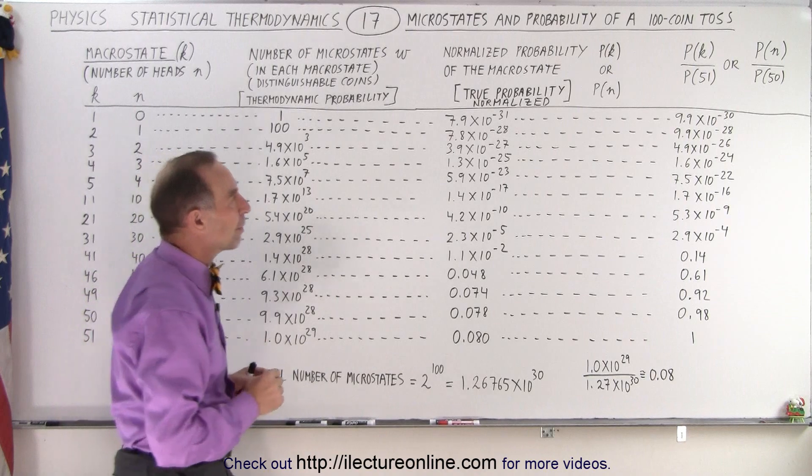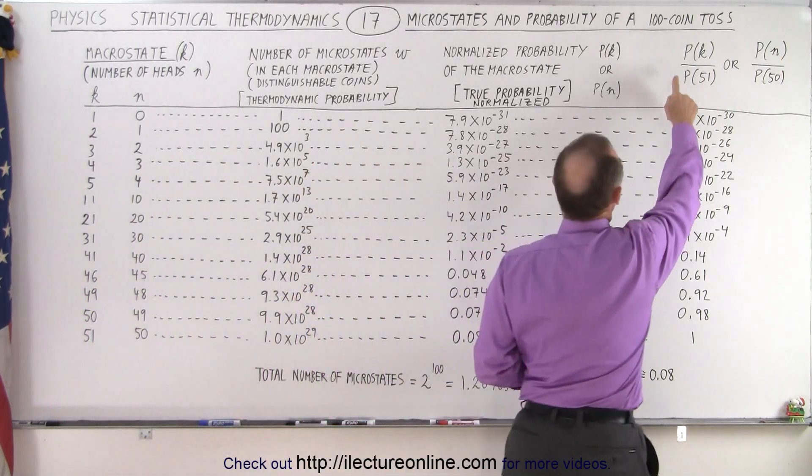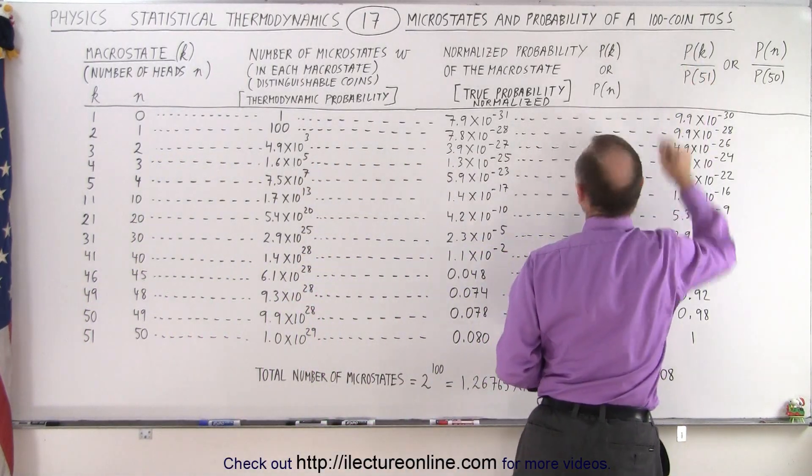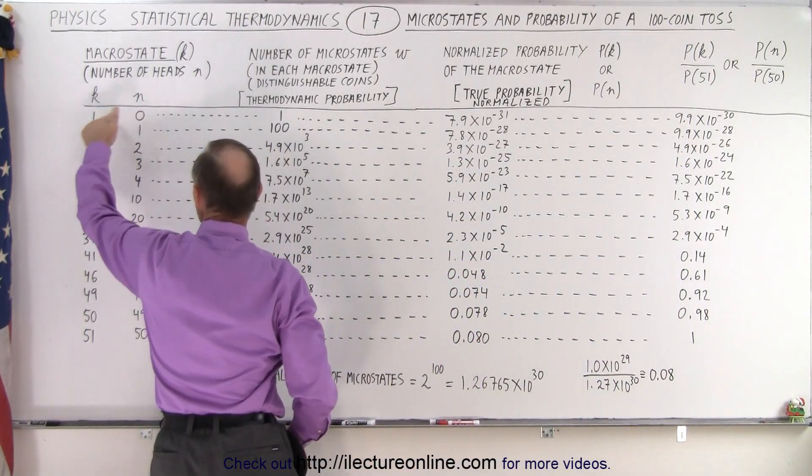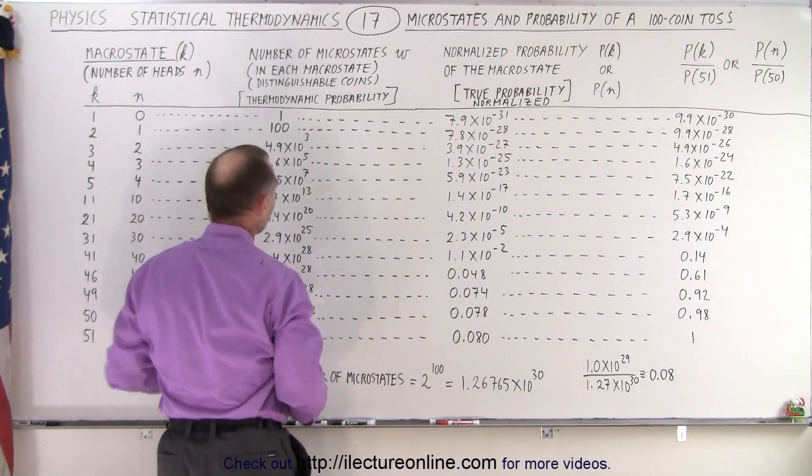And then, of course, we can also look at the probability where we take the probability of a particular macrostate occurring. So any one of these starts from 1 for 0 heads, 2 for 1 head, 3 for 2 heads, and so forth.